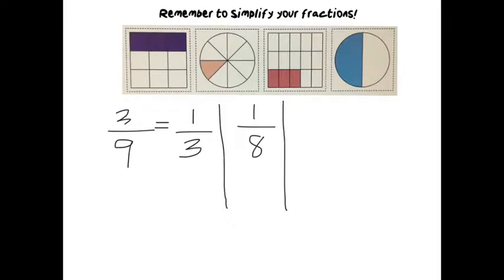Our third picture, we have got 15 pieces altogether and 3 of those are colored in. So that's 3 out of 15. Again, both of those numbers are in the 3 times table so we can also simplify this fraction. 3 divided by 3 is 1, 15 divided by 3 is 5, so that is a fifth.